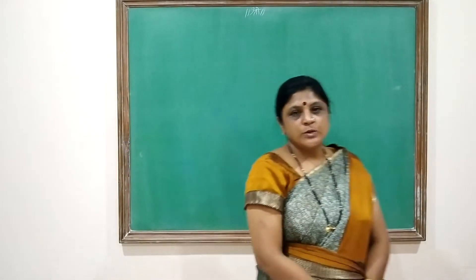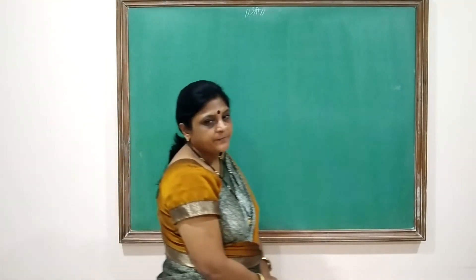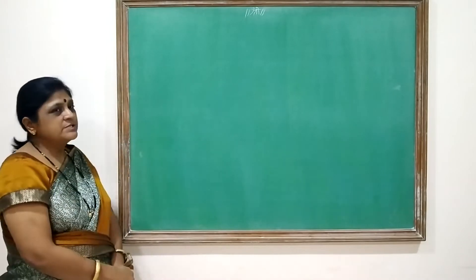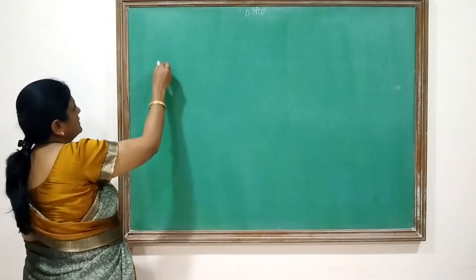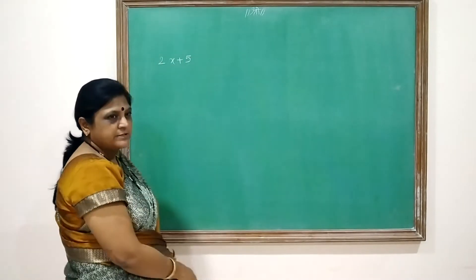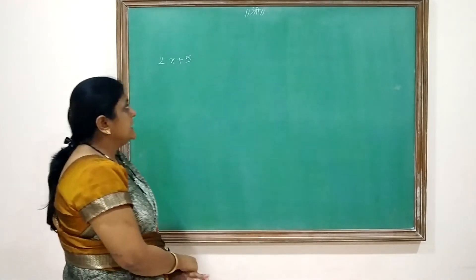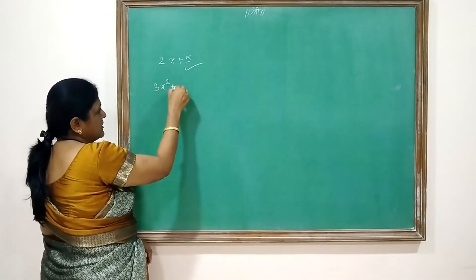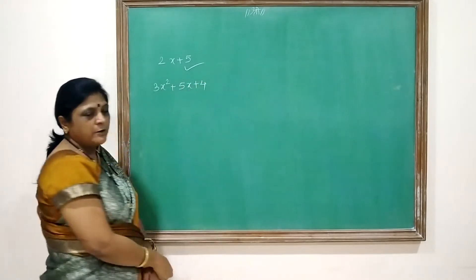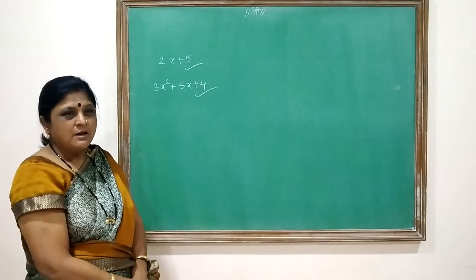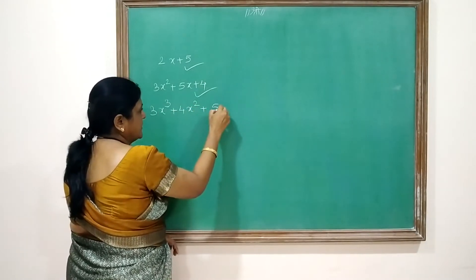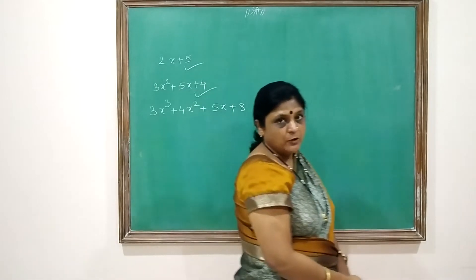Hi students, today I am going to start with the chapter of polynomials. Let's start with the introduction first. For example, 2x plus 5 is a polynomial. 3x squared plus 5x plus 4 is also a polynomial. And 3x cubed plus 4x squared plus 5x plus 8 is also called a polynomial.